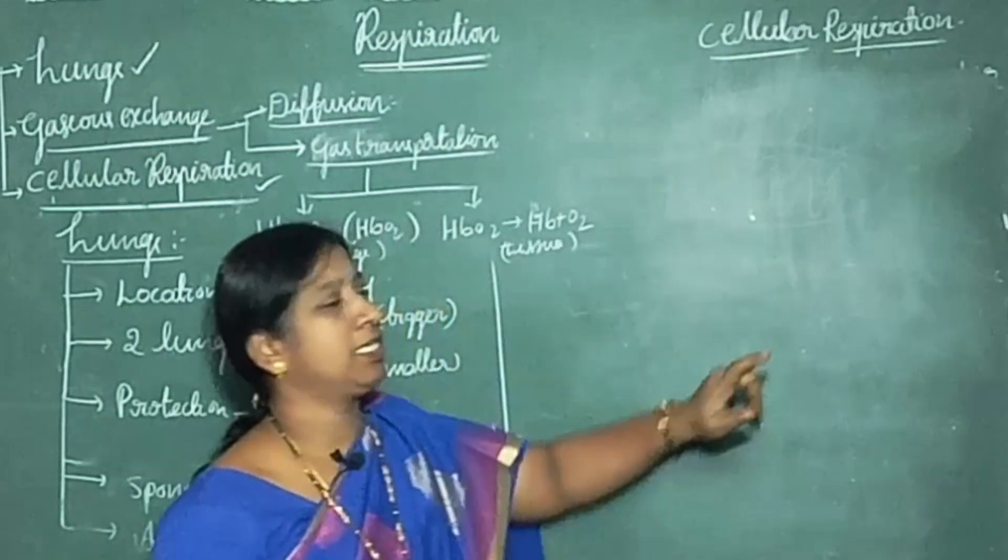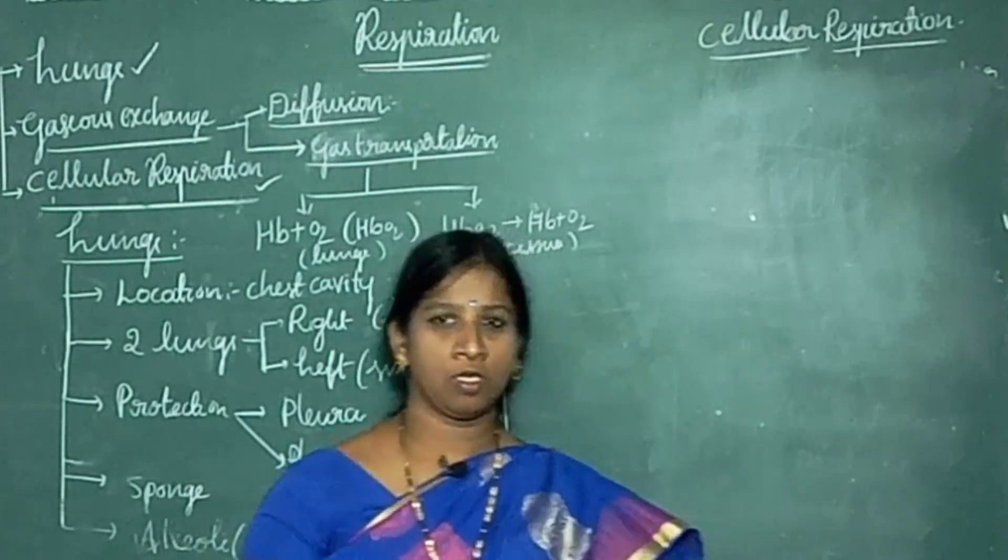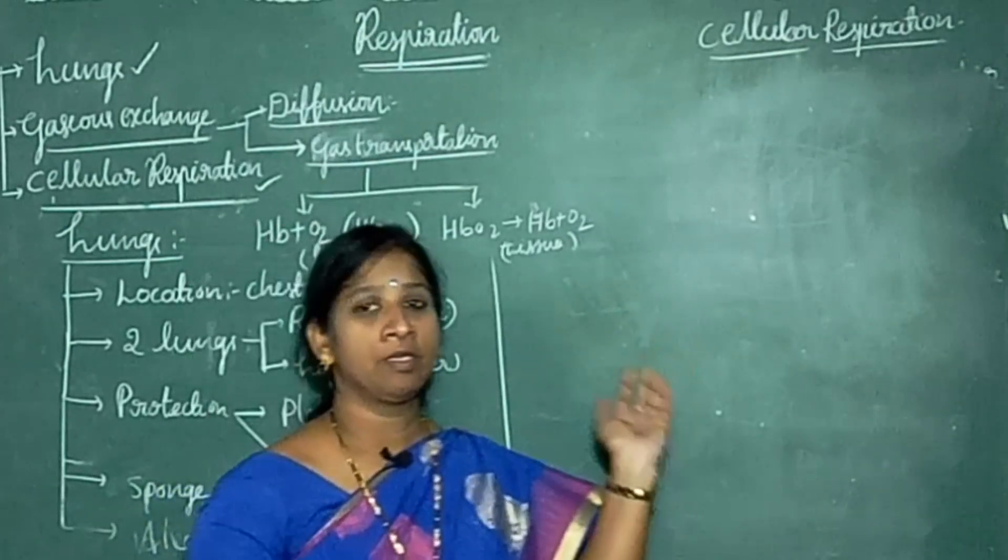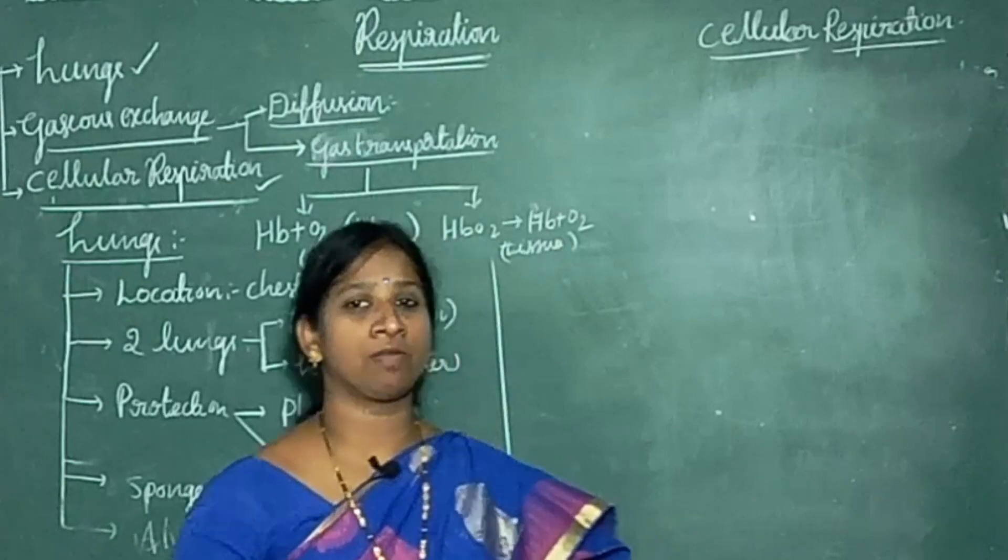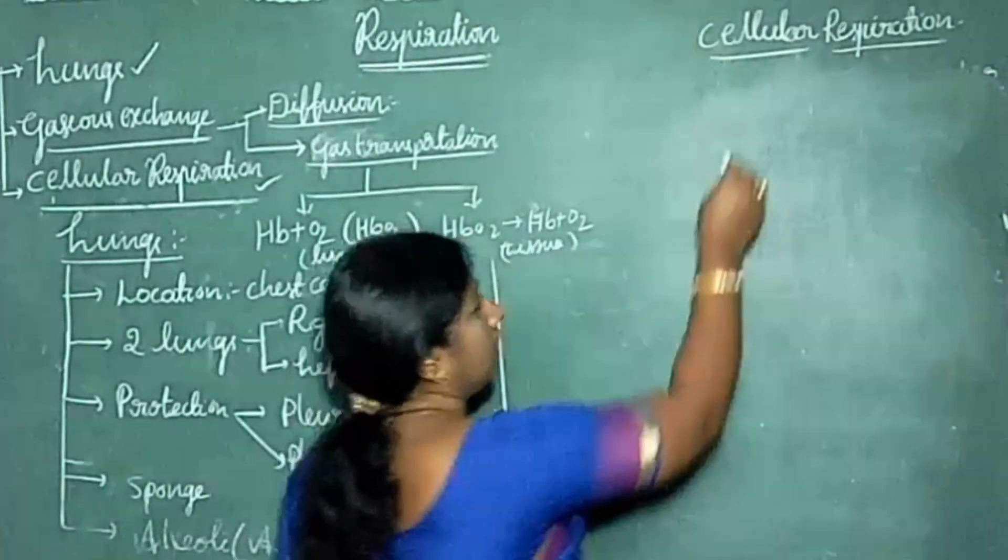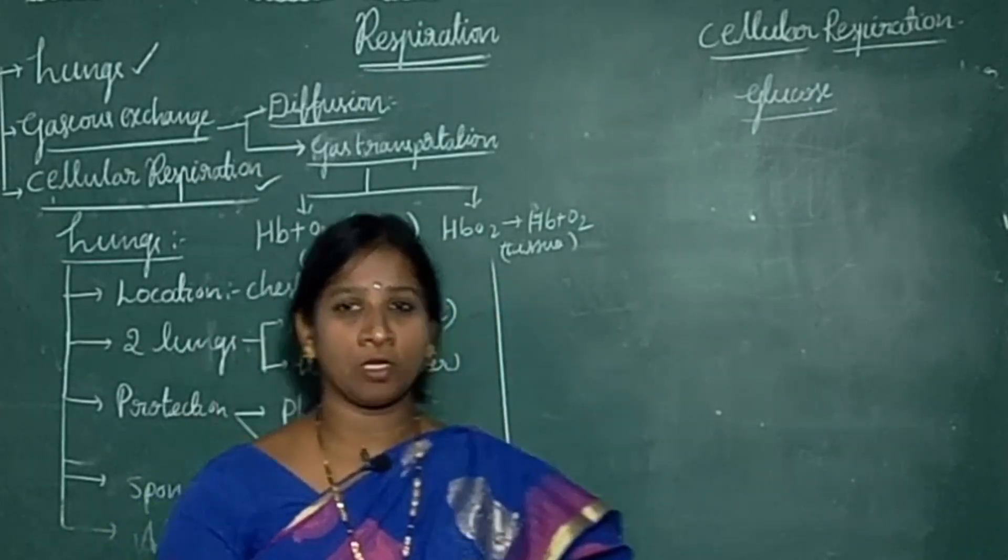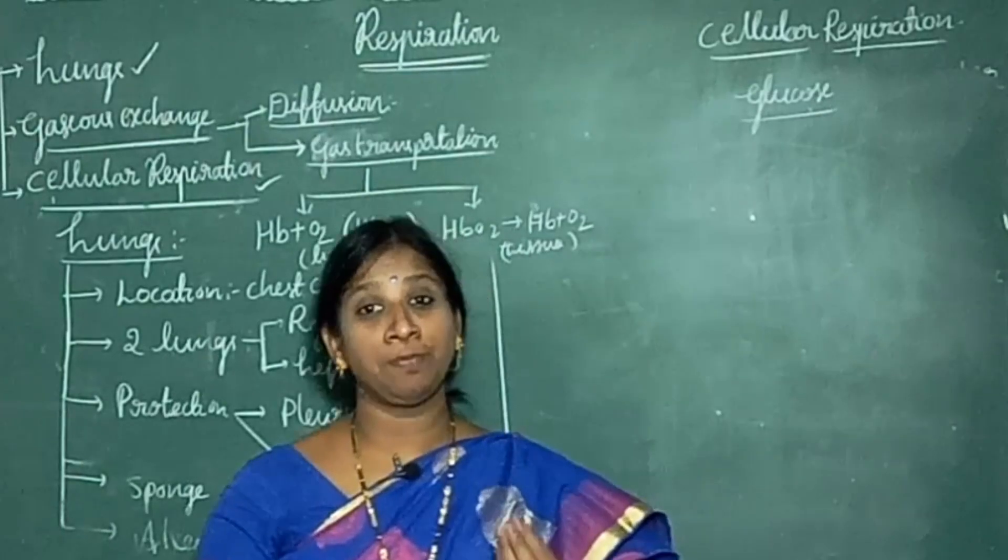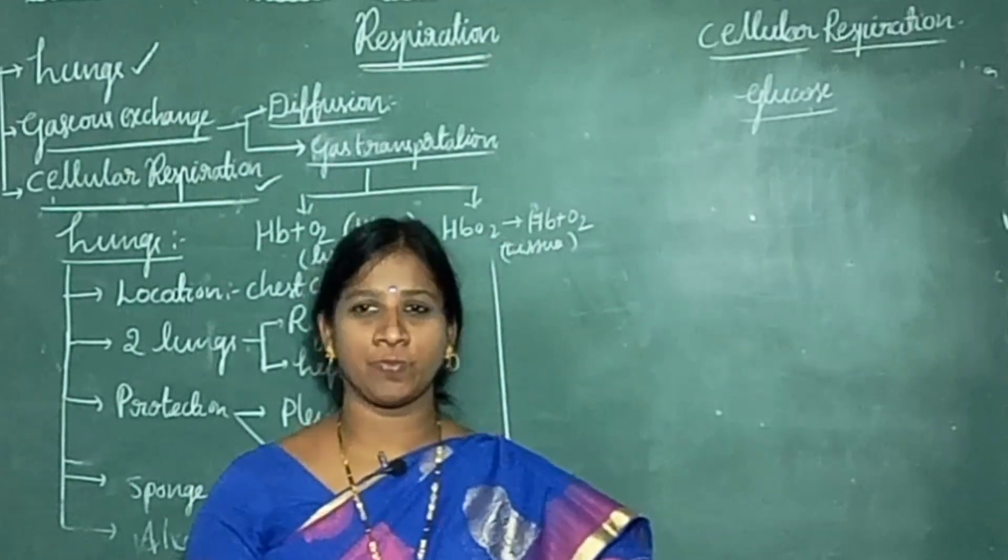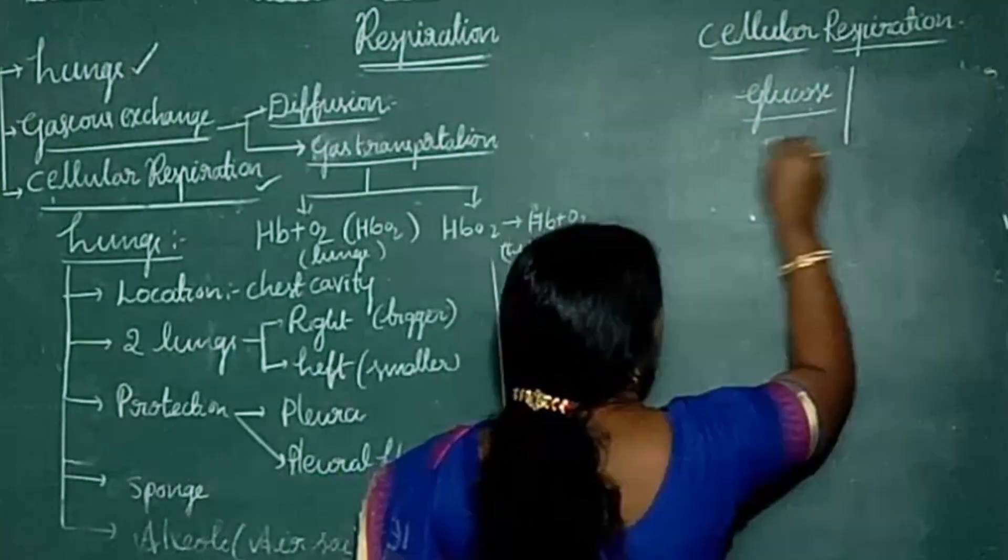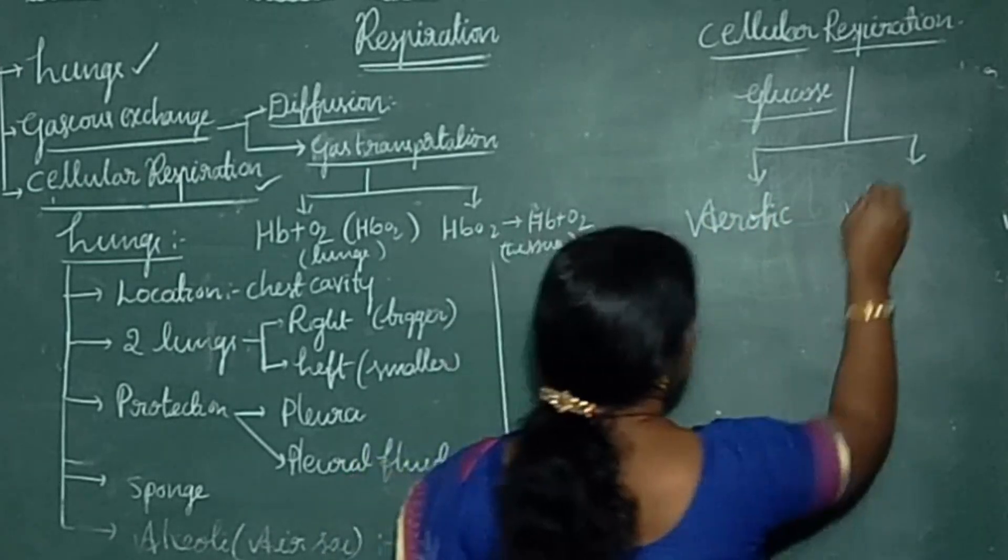Actually we need glucose and oxygen. We will get glucose by taking food. After digestion, food reaches all the cells along with the blood. From the lungs, every cell receives oxygen as well as glucose. These two are very essential for cellular respiration. Once glucose enters into the cells, in presence of oxygen, now based on the presence of oxygen there are two types. One is aerobic respiration and another one is anaerobic respiration.